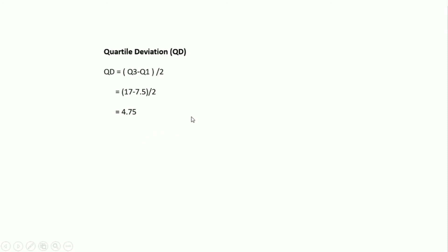Quartile deviation is calculated by the formula: (Q3 − Q1) / 2. With Q3 = 17 and Q1 = 7.5, subtracting gives 9.5, and dividing by 2 gives 4.75. So the quartile deviation is 4.75. Now let's move on to some coding to complement this mathematics.